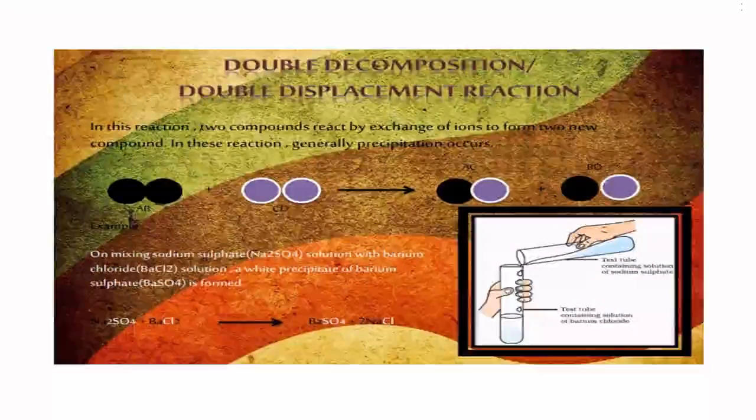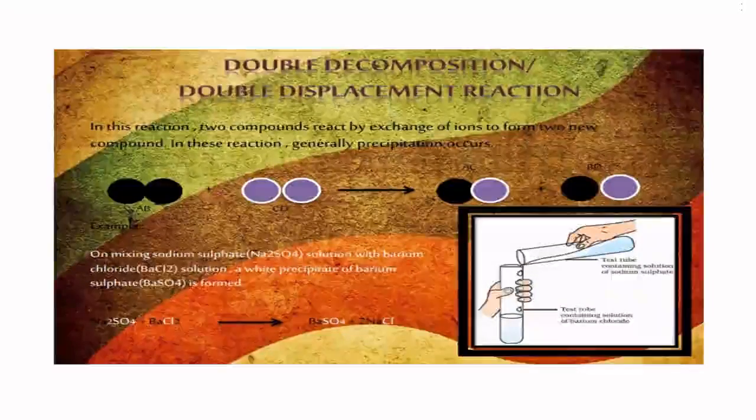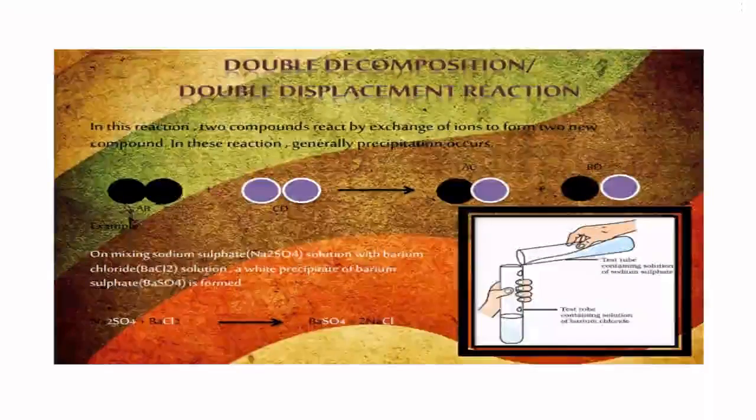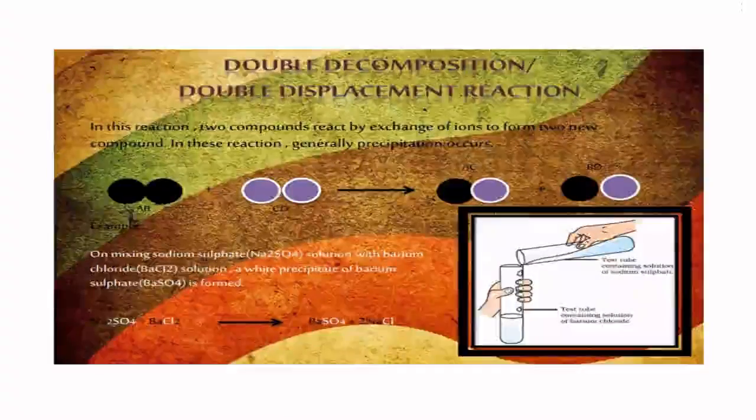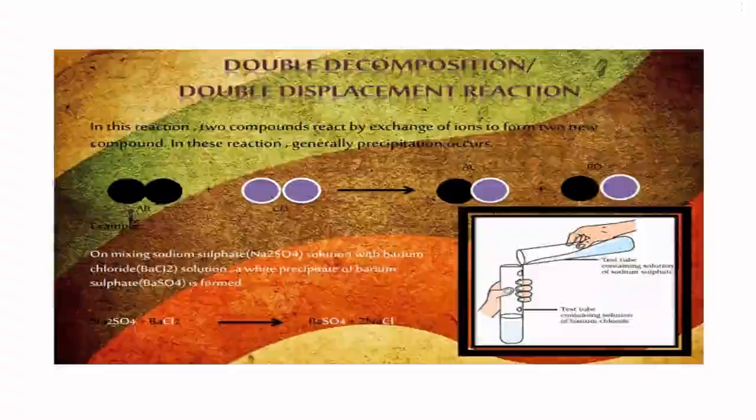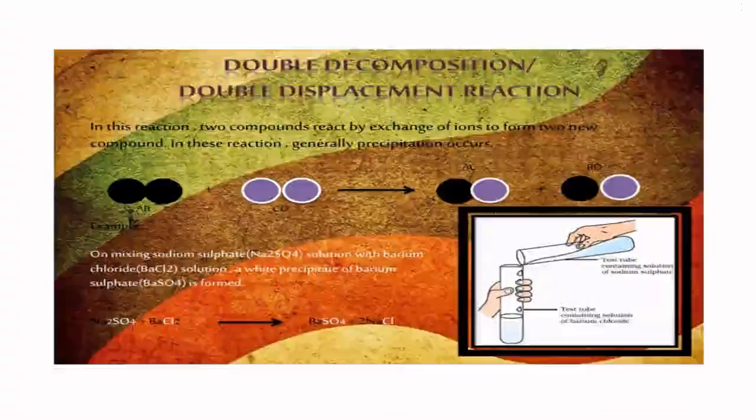Double decomposition or double displacement reaction: In this reaction, two compounds react by exchange of ions to form two new compounds. In this reaction, generally precipitation occurs.